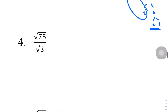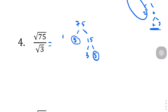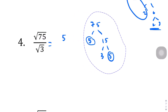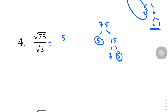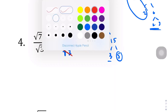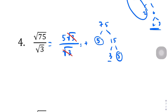Question number 4: 75 breaks down to 5 and 15, and 15 breaks down to 3 and 5. This 5 happens twice, so we pull that out into the numerator. We get 5 square root of 3 over square root of 3. The square root of 3 in the numerator and denominator cancel out, and what we're left with is plus or minus 5.